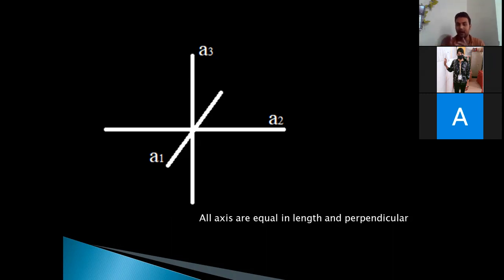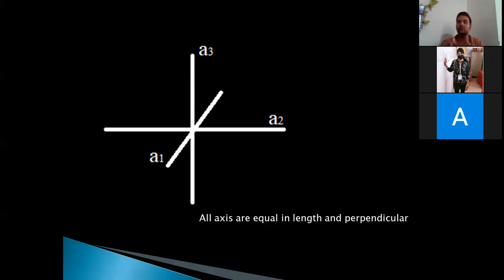All three axes are equal in length and they are perpendicular to each other. When the axes are equal, you don't need to refer to them as A, B, C — because different names imply a difference in their length. Since the axes are equal in length, you can refer them by the same alphabet A, but for variation you refer them as A1, A2, and A3.